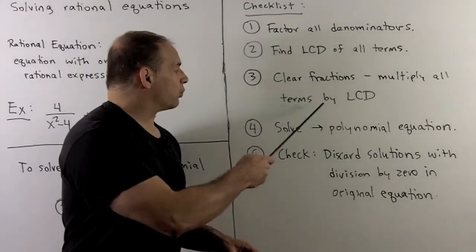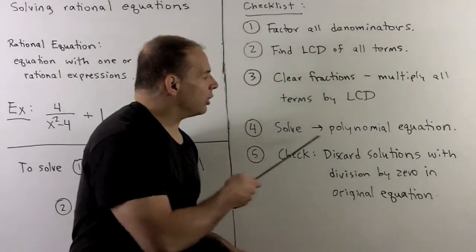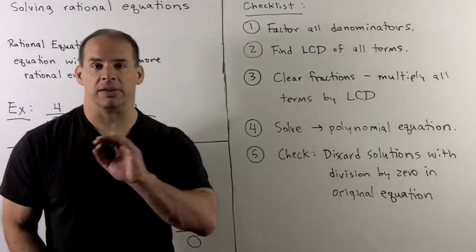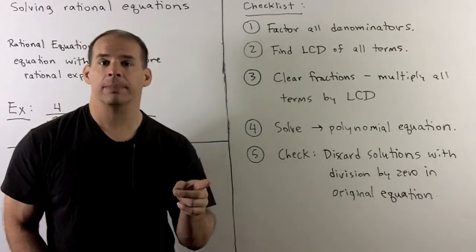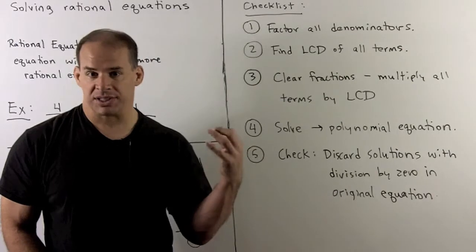Once I've done step three, we'll have a polynomial equation, so we'll need to clean things up, put zero on one side, everything else on the other, then we just use our old methods to solve.